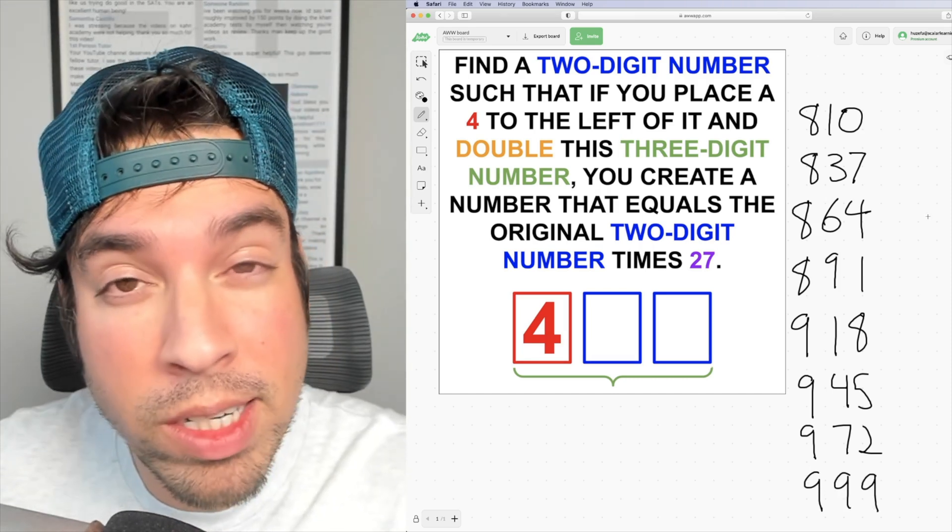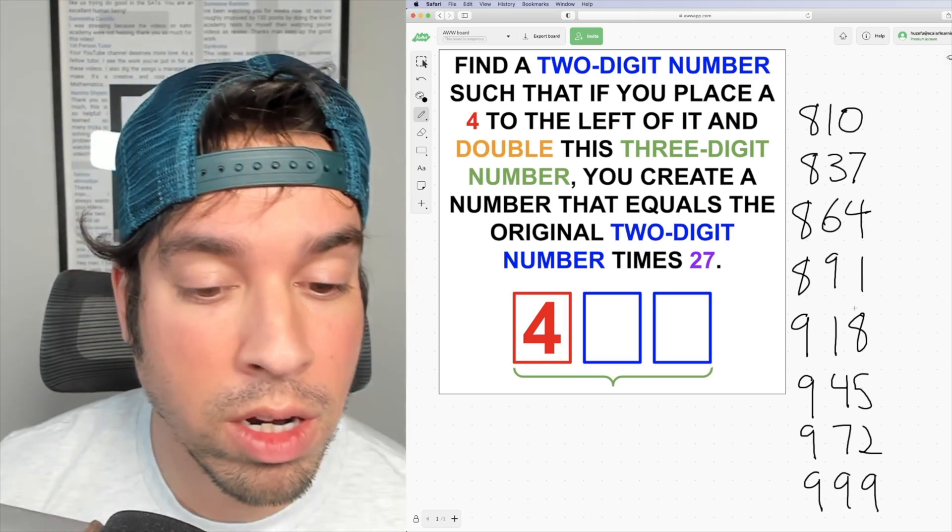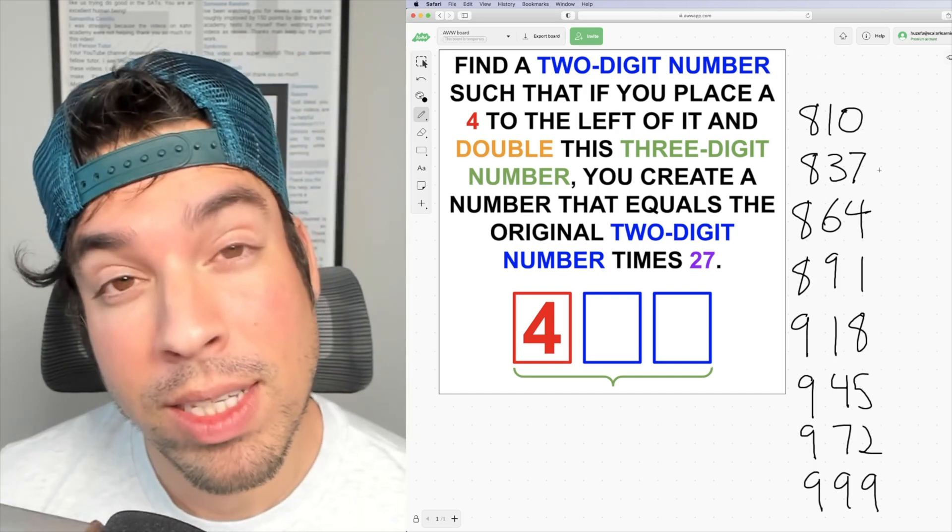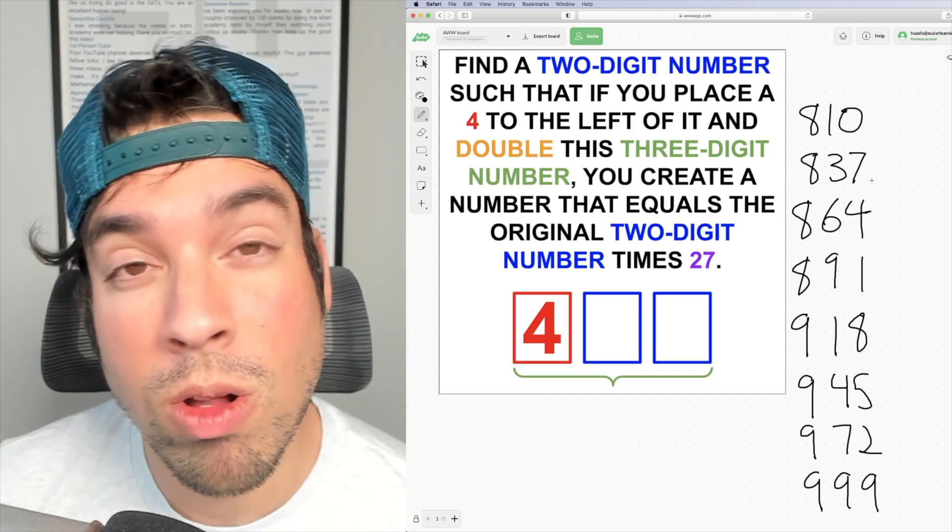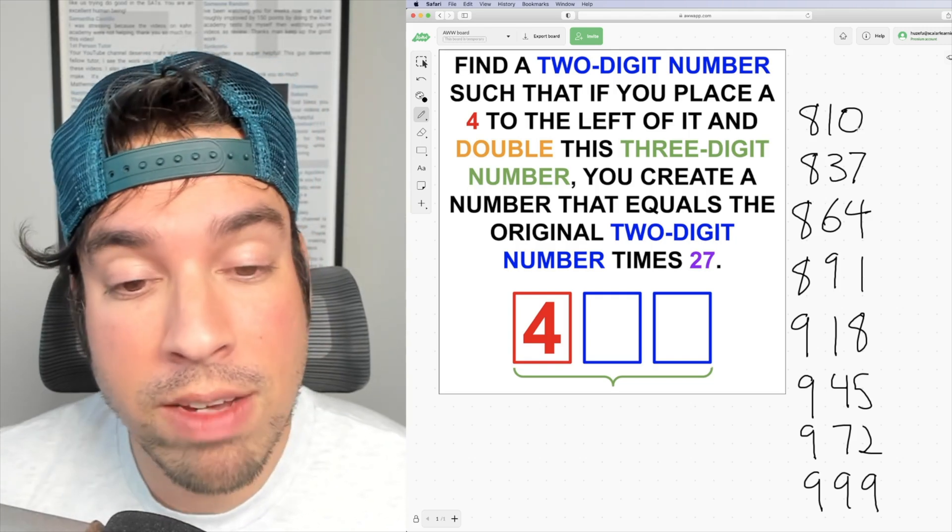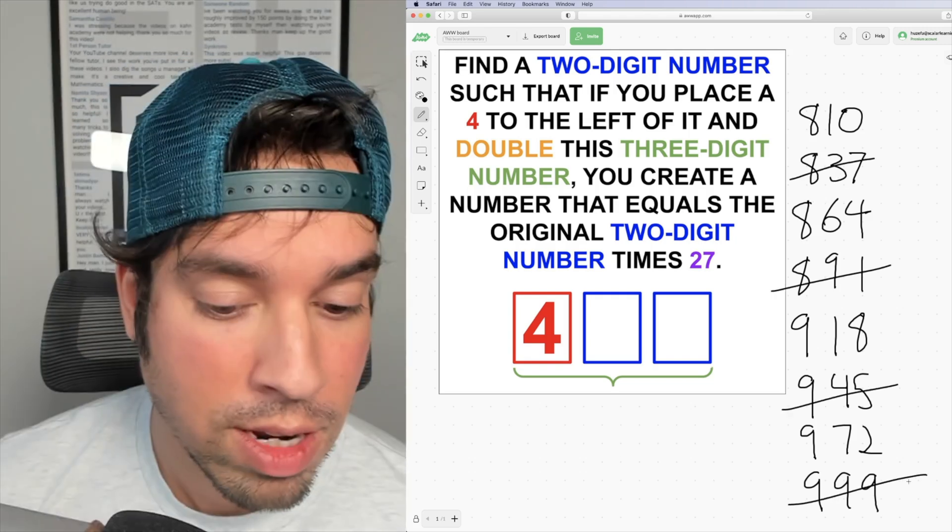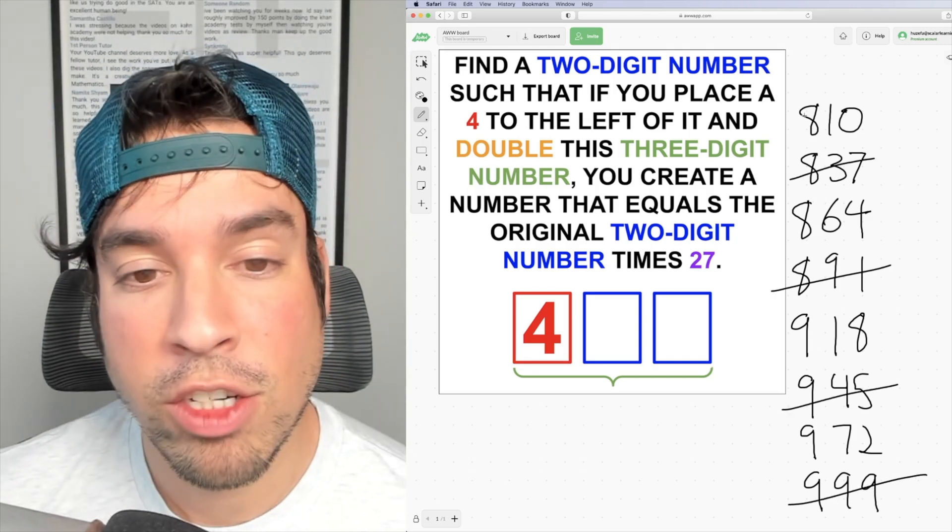So again, double the three digit number has to be one of these eight options. But now I can limit it further because I know it's supposed to be double. So all of the odds, if you double the number, it's always going to be even. So all the odd ones are out. Now I got it down to four choices.